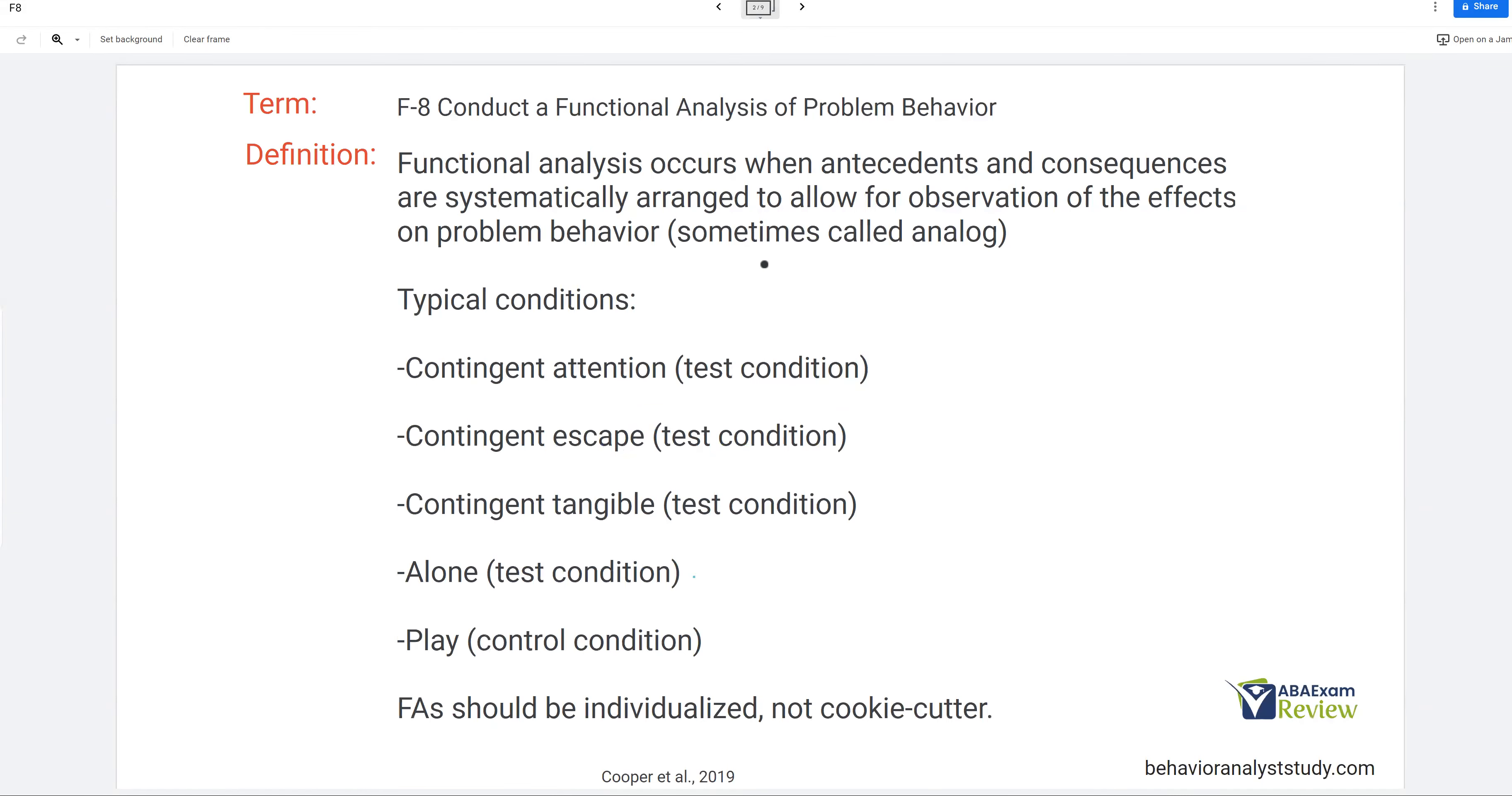So functional analysis. You'll know it's a functional analysis if antecedents and consequences are being systematically arranged or manipulated. With indirect assessments and direct assessments outside of our functional analyses, things like descriptive assessments, we don't actually manipulate anything. And so while the functional analysis is a direct assessment because we are directly observing the behavior, we're going one step further and actually systematically changing the environment because we want to see what these manipulations do to the behavior. That's how we're going to determine our function.